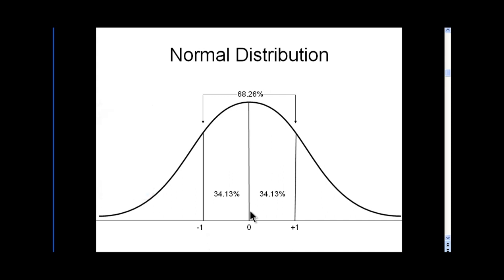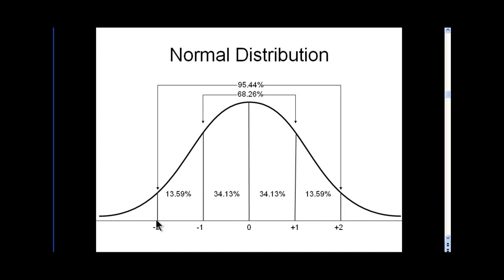The majority of people — a little more than two-thirds — on criteria like height and intelligence fall within one standard deviation below and above the mean. If you go further out to negative two and plus two standard deviations, there's 13.59% of observations between negative one and negative two, and another 13.59% between plus one and plus two, for a grand total of 95.44% of observations between negative two and plus two standard deviations.